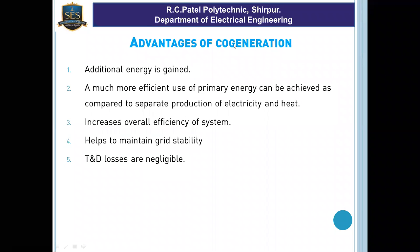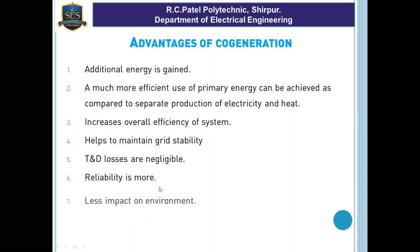If we compare our supply utility to our company, like the MACB, what does the distribution center have in terms of distance from the consumer? That distance affects the transmission and distribution losses. After that, reliability is more and it has less impact on the environment.